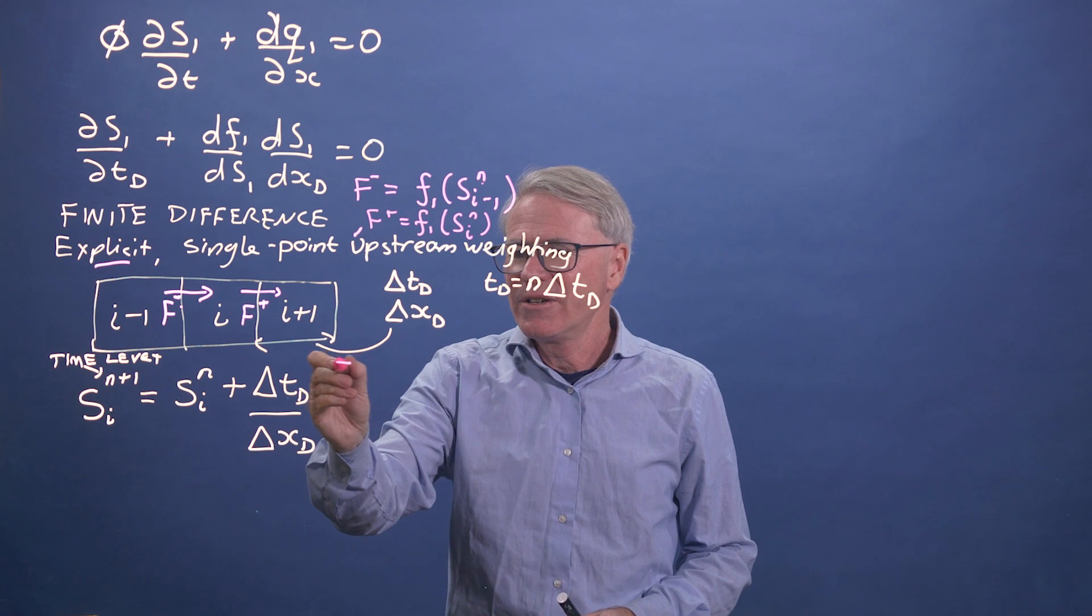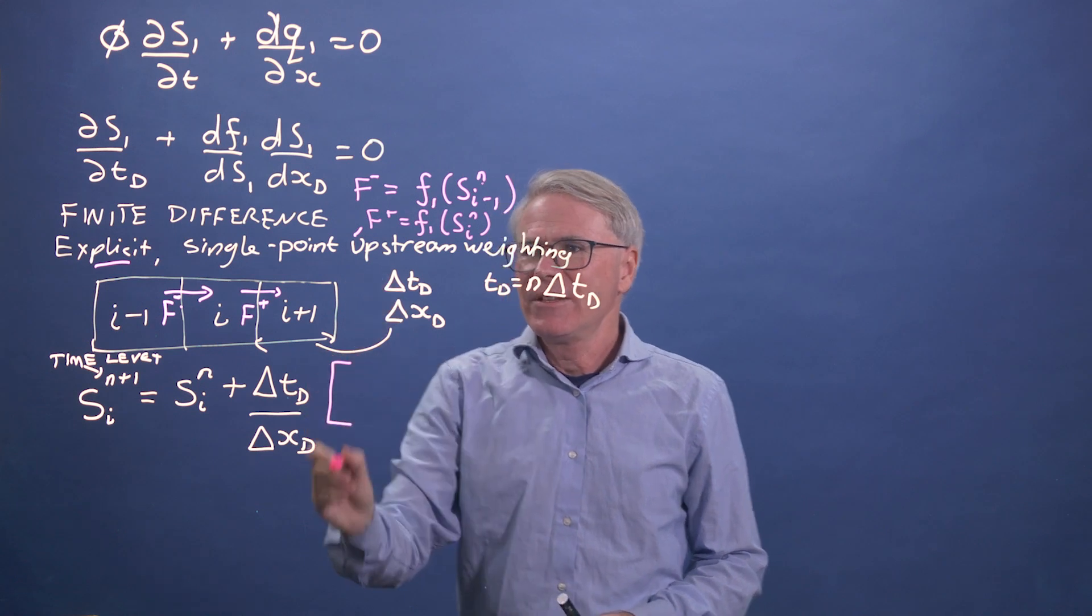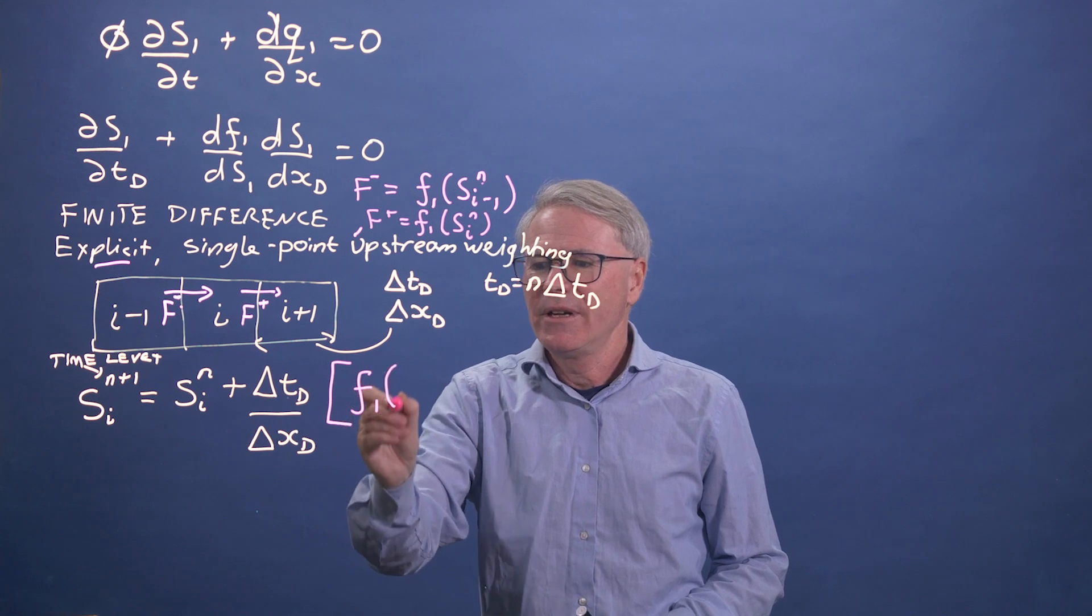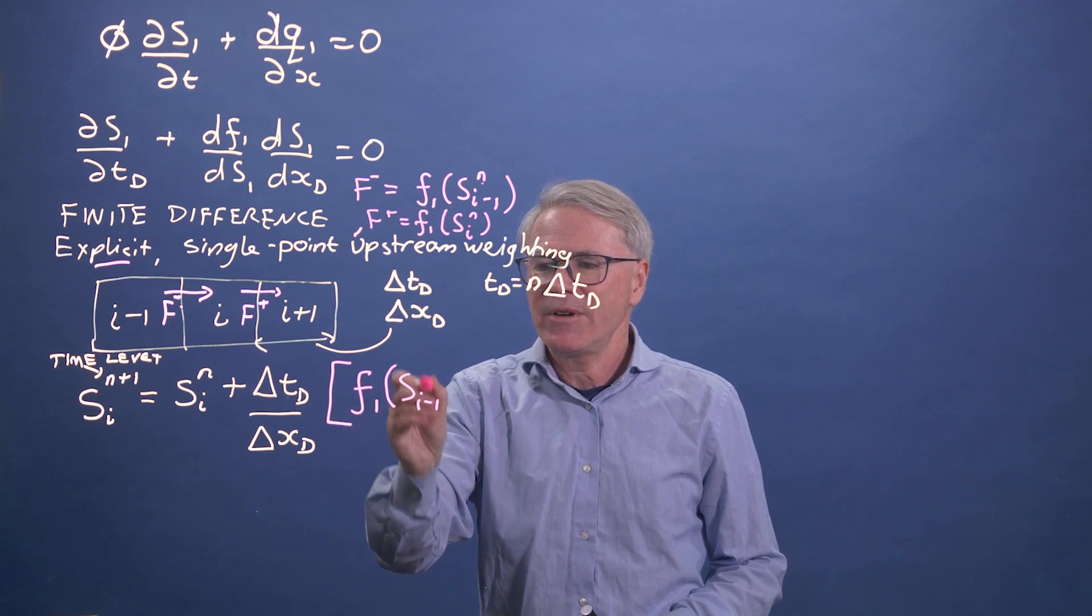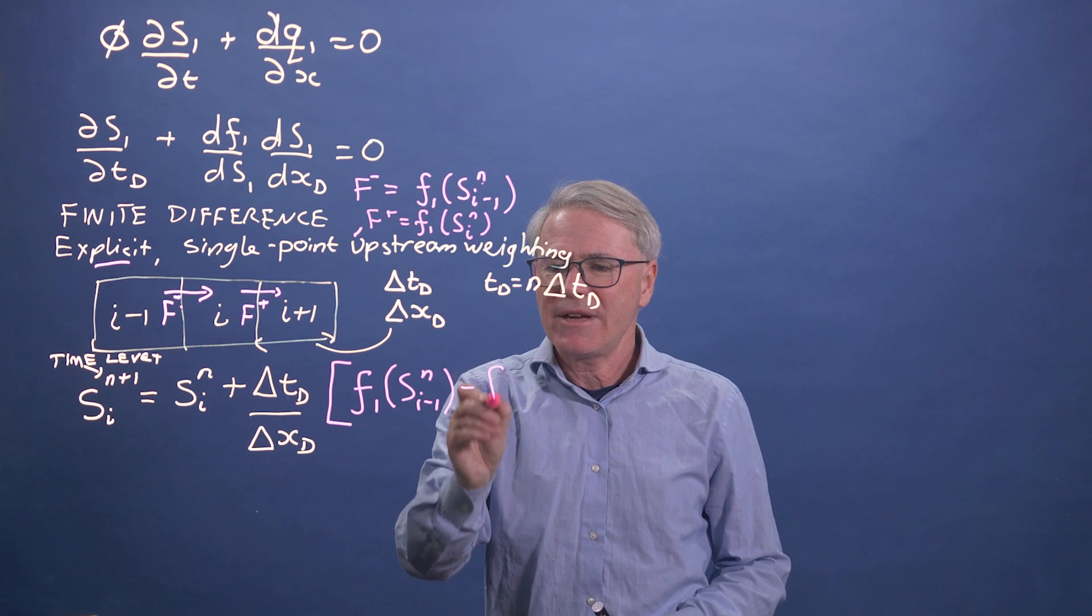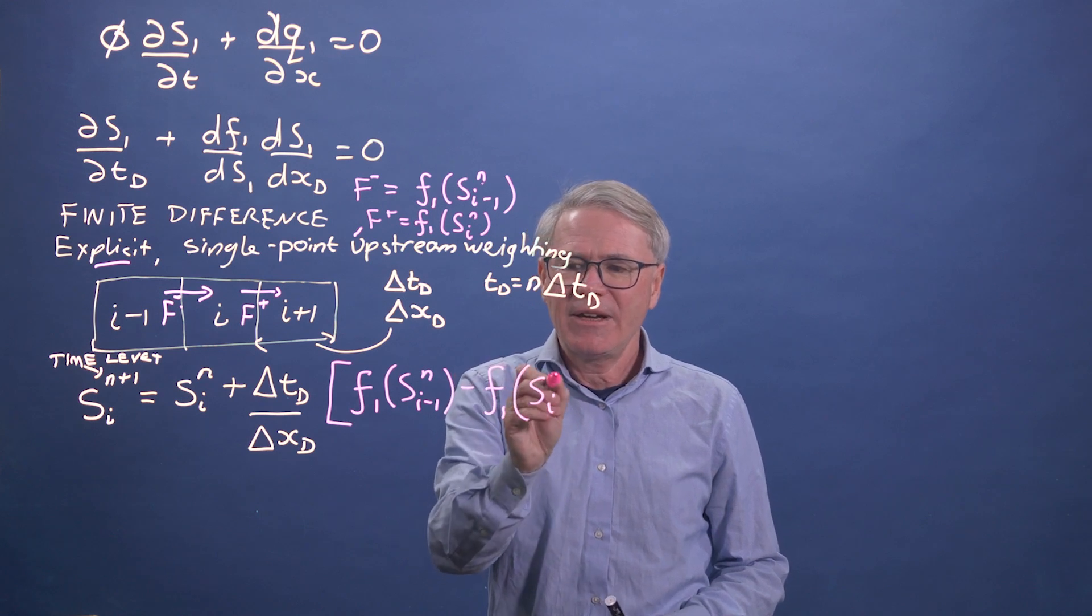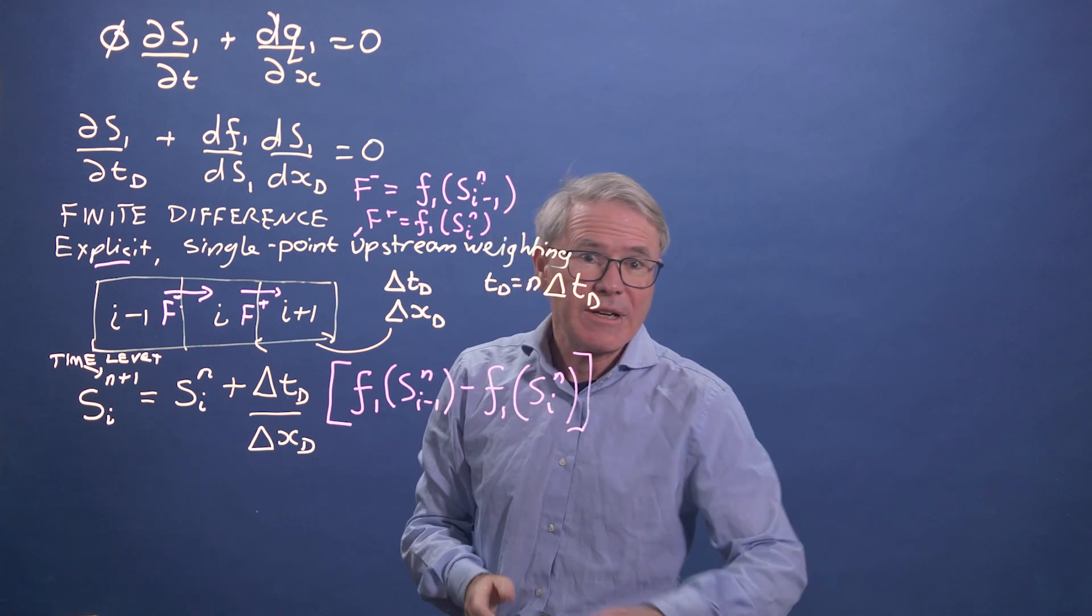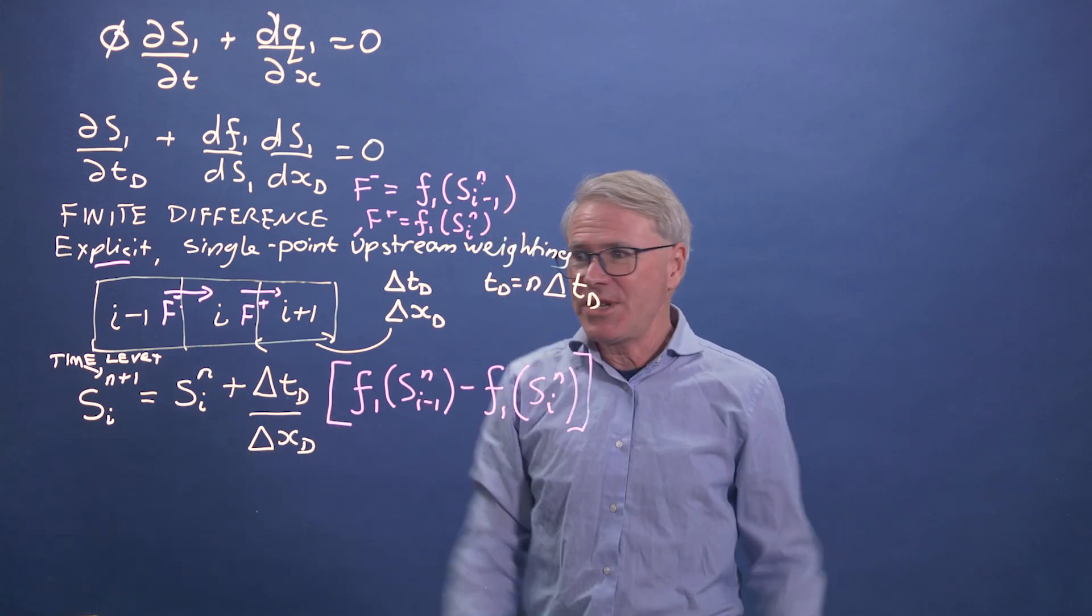So now we can write this in. So what goes in is f one at s i minus one at n. And what goes out is f one at s i of n. So we can start with one dimensional system,